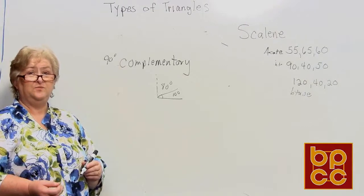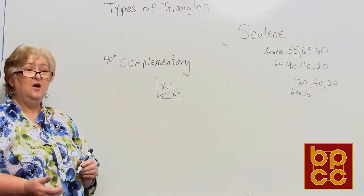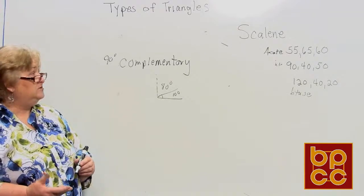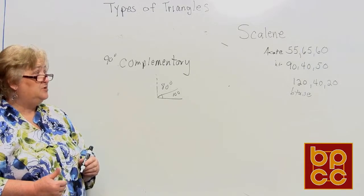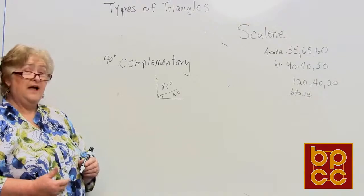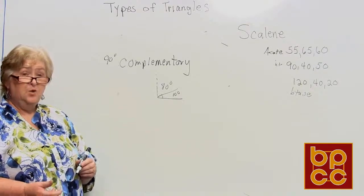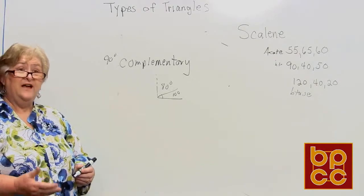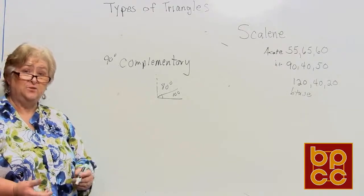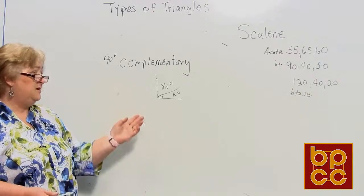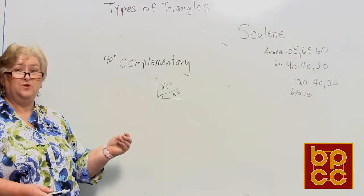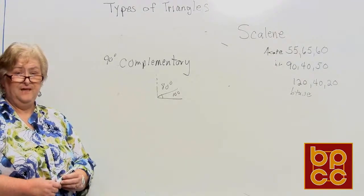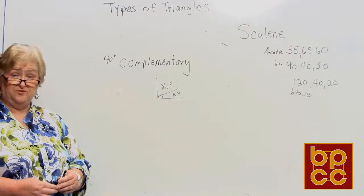In this lesson we've talked about the different types of triangles based on side lengths and angles, how to identify acute or obtuse triangles, that triangle angles add up to 180 degrees, how to find missing angles, and finally supplementary angles which add up to 180 and complementary angles that add up to 90.